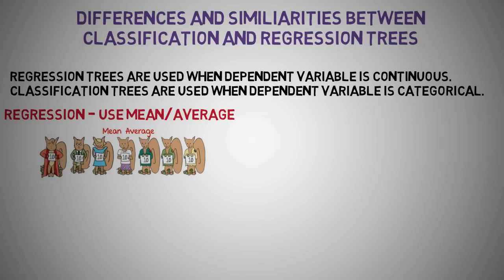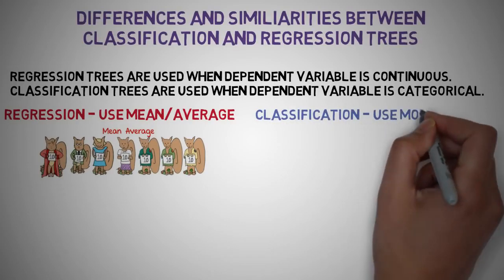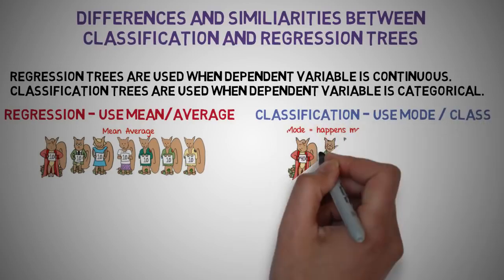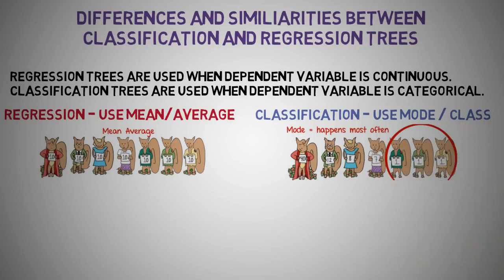In case of classification trees, the value or class obtained by the terminal node in the training data is the mode of observations falling in that region. Thus if an unseen data observation falls in that region, we'll make its prediction with a mode value.